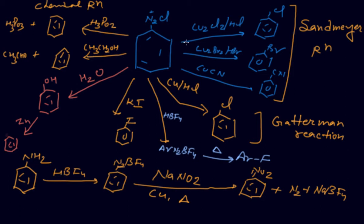CuCl2 with HCl, we are getting chlorobenzene, known as Sandmeyer reaction. If I take Cu2Br2 with HBr, this is also bromobenzene, known as Sandmeyer reaction. If I take CuCN with HCl, I will get cyanobenzene. These three products, if I am getting by different catalysts, the same reaction is known as Sandmeyer reaction.